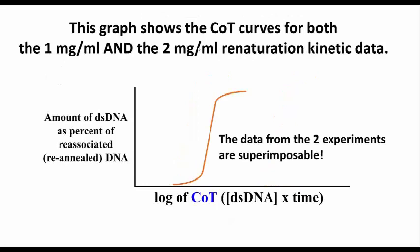So now, this graph shows the CoT curves for both the one milligram per mil and the two milligram per mil renaturation kinetic data. Remember that the CoT value is the concentration of the double-stranded DNA that has formed at a given time point, multiplied by that time point. It may not be entirely intuitive, but the result is that the data from the two experiments are superimposable. It looks like there's only one curve.